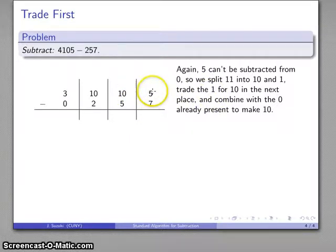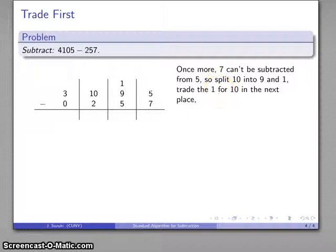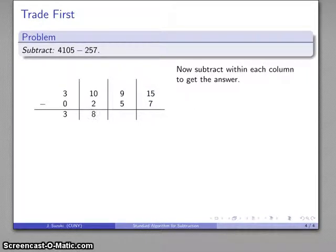But, again, last column. 7 from 5 can't do that. So I'll need to split this 10 into a 9 and a 1. I'm going to trade that 1 for 10 in the next place. 10 and 5. It's going to be 15. And let's see. Now I'm going to be subtracting 0 from 3, 2 from 10, 5 from 9, 7 from 15. And I can do all of that, no problem. And I can subtract to get my final answer. And so there's my answer. 3,848.